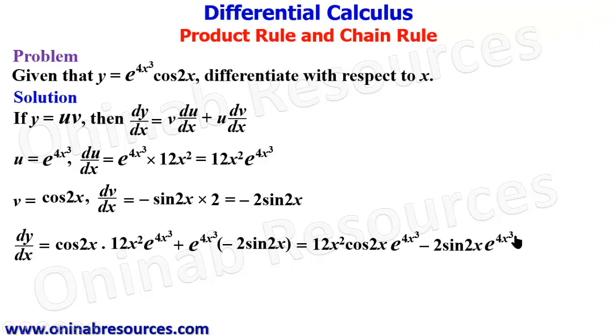And here is minus raised to power 4x³. We can then factorize, 2 is here, 2 is here, e raised to power 4x³. So I'm going to have 2e raised to power 4x³ into 6x² cos 2x minus sine 2x.